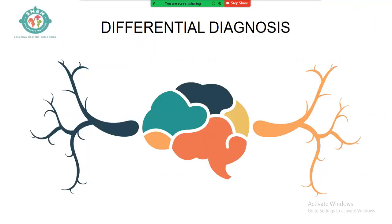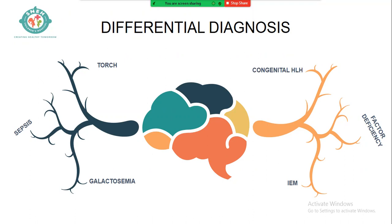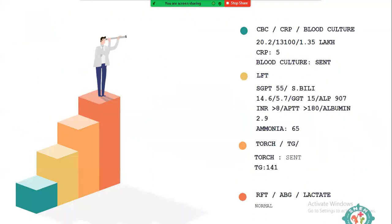Scratching our gray matter for differentials: sepsis is common, TORCH infections, IEM like galactosemia presenting this way, factor deficiencies leading to coagulopathy, and congenital HLH. These were our lines of thought at that time, but you may have had different differentials — please write those down too.